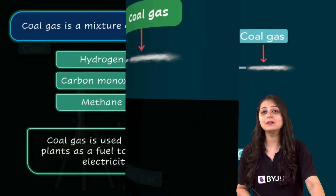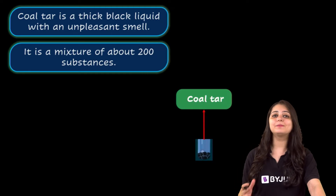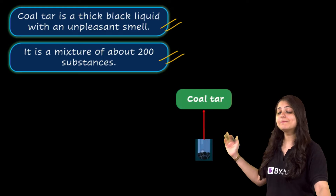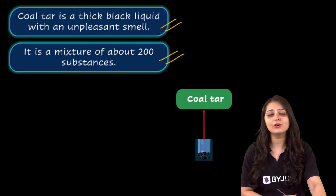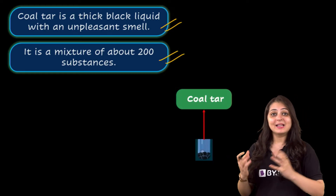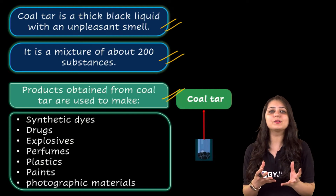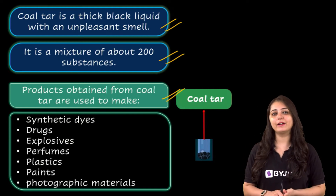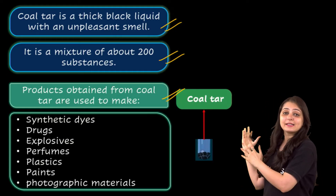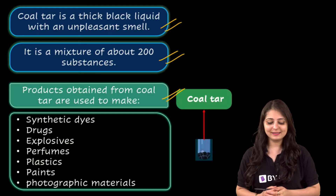Coal tar is a thick black liquid with an unpleasant smell. It's actually a mixture of around 200 substances like benzene, naphthalene and phenols. The products obtained from coal tar are used as starting materials for manufacturing various substances used in everyday life, such as synthetic dyes, drugs, perfumes, plastics and paints.